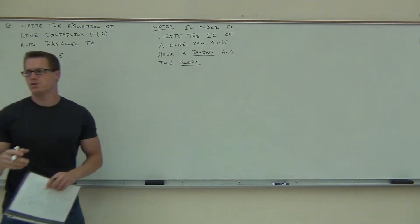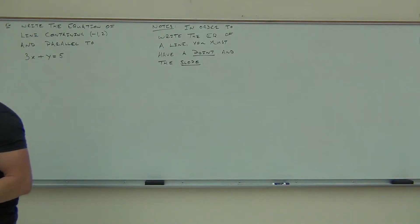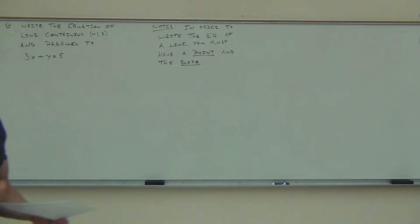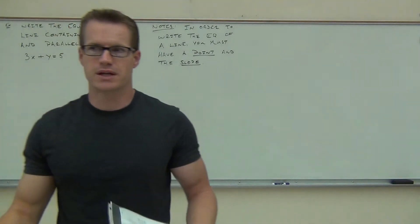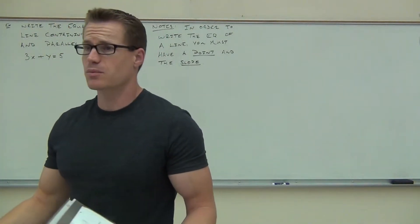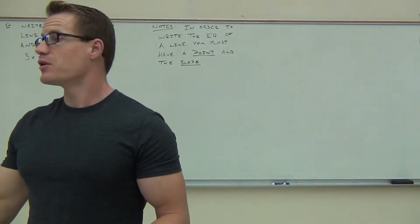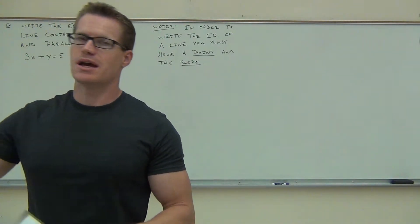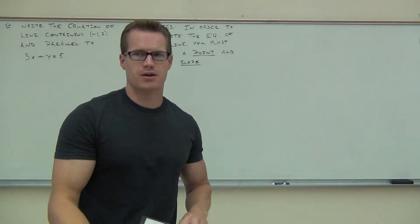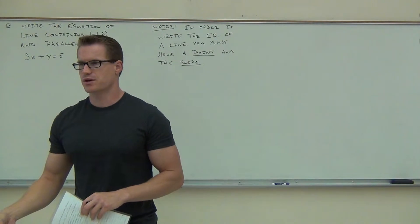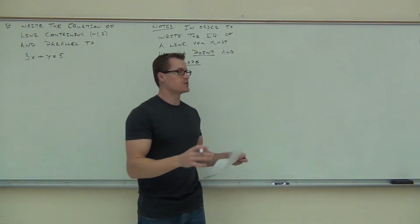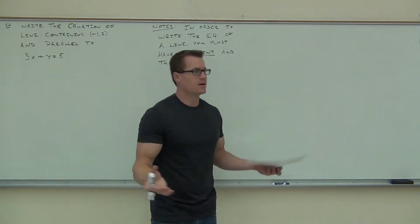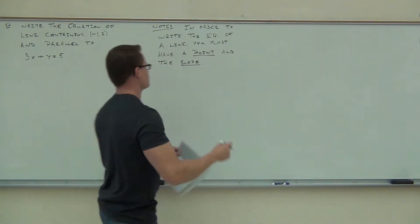You've got to have a point and a slope. 95% of the time, we're going to be using the point-slope form of a line — we need a point and we need the slope. If you have those two things, you have the equation of a line. You've got to have those two conditions; otherwise, you can't make an equation.